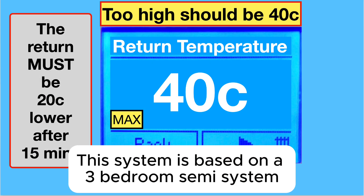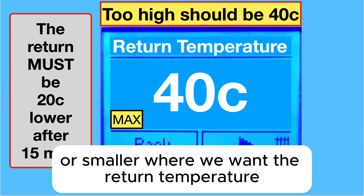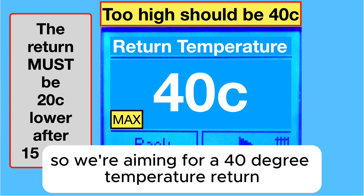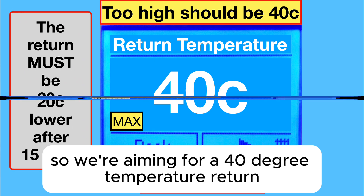This system is based on a three-bedroom semi-system or smaller, where we want the return temperature to be 20 degrees lower than the flow. So we're aiming for a 40 degree temperature return.